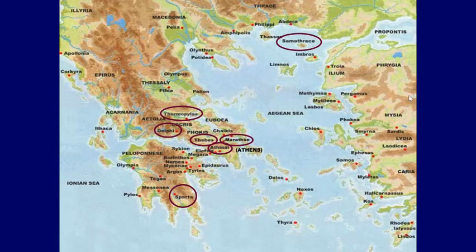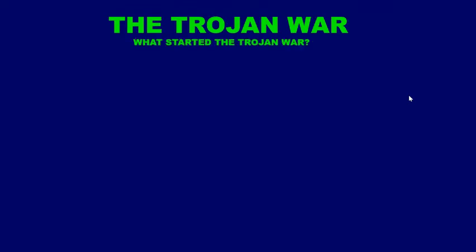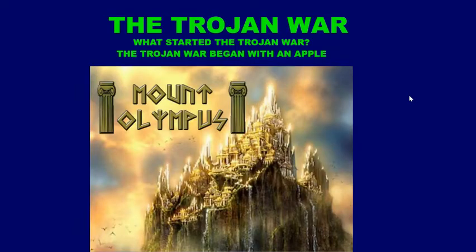The next place I want to show you is Samothrace — there's a famous sculpture that comes from there. And then finally, I want to show you Troy. Have you ever heard of the city of Troy? Troy was a famous city, and the most famous thing that happened there was the Trojan War. The Trojan War was started by an apple — have you ever heard of a war being started with an apple before?